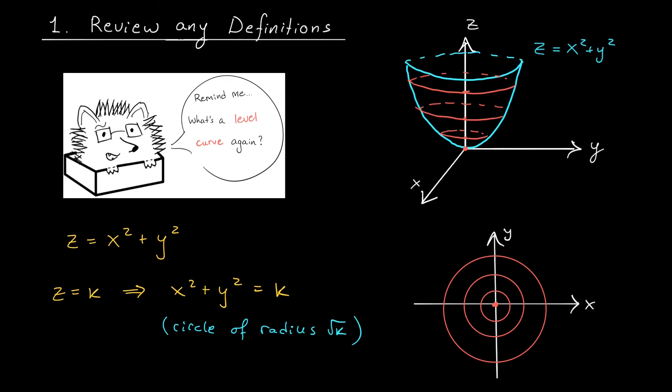Now for k values greater than or equal to zero, this gives us the equation of a circle, a circle centered at the origin with radius root k. So for instance, when k is zero, we get just a point. When k is one, we get a circle of radius one, and so on. And there you have it, we've matched this equation to a collection of level curves.